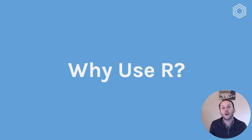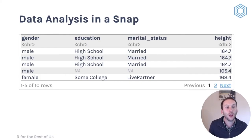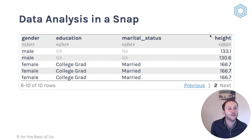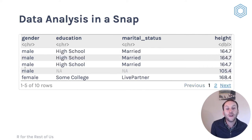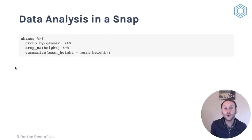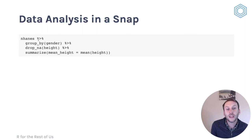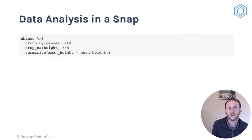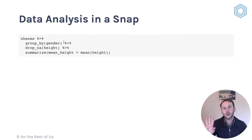So why learn R? It does take some time and energy to learn it — why is it worth it? First of all, you can do data analysis super quickly. Say you have some raw data with four variables: gender, education level, marital status, height. If I want to summarize this in a few lines of code, I can take this — my data here is called nhanes. This thing here is called the pipe, a fundamental feature of the Tidyverse which I'll talk about more in the next few lessons. Essentially what I'm doing is saying, let's group by gender — making gender into two separate groups.